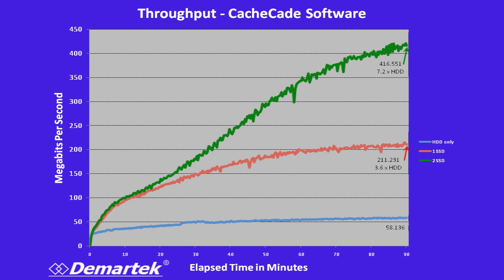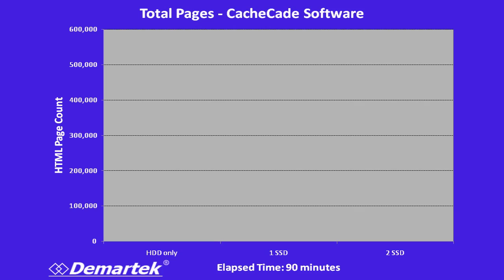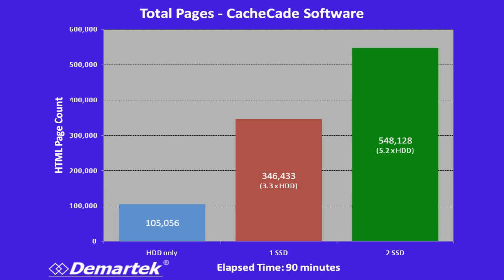You'll notice the throughput was still climbing after 90 minutes. Turning to the HTML page count — the number of pages rendered over 90 minutes by the web server in each configuration — with hard drives only we achieved 100,000 pages. By adding the first SSD, we increased that to 300,000, which is more than three times as many. When we added the second SSD, pages rendered went all the way up to over 500,000 in the same 90-minute period.